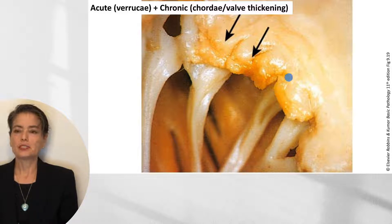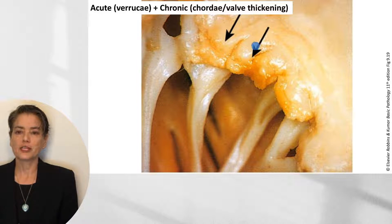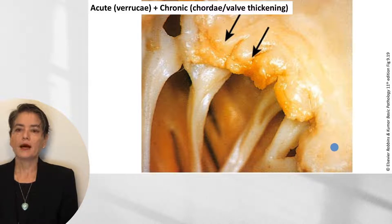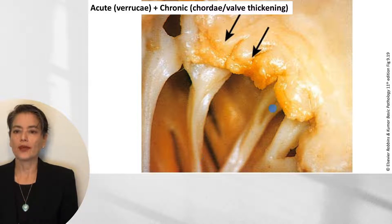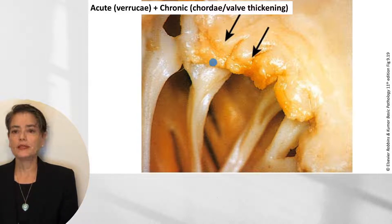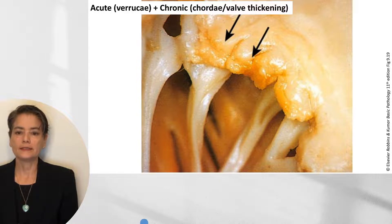Here are the verruci — these tiny little bits right here on the very edge. Some students mistake the valve thickening for the vegetation, but that thickening is due to chronic rheumatic heart disease. We know this patient has chronic rheumatic heart disease because of the thickened chordae tendineae. These are the tiny verruci of acute rheumatic heart disease.